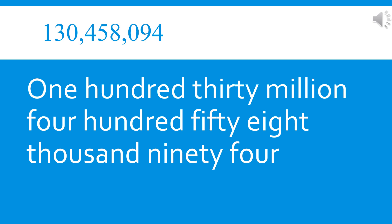Another number is given for you to read: 1,304,580,94. The periods are separated with commas. The place values of each digit starting from ones are: 4 ones, 9 tens, 0 hundreds, 8 thousands, 5 ten thousands, 4 hundred thousands, 0 millions, 3 ten millions, and 1 hundred million. This number is read as: one hundred thirty million, four hundred fifty-eight thousand, ninety-four.